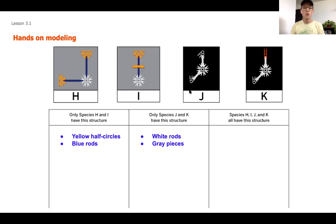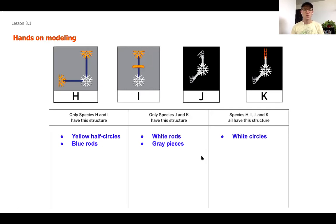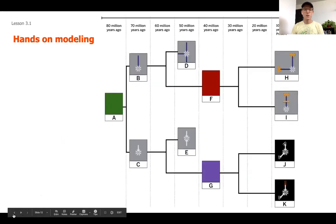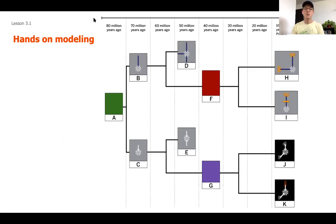Now we've thought about the unique structures of each group. The next thing we want to do is think about what they all have in common. The thing that H, I, J, and K all share is the white circles. That's going to help us work backwards to determine what species F and species G are going to look like.